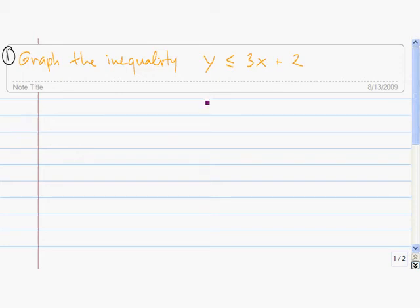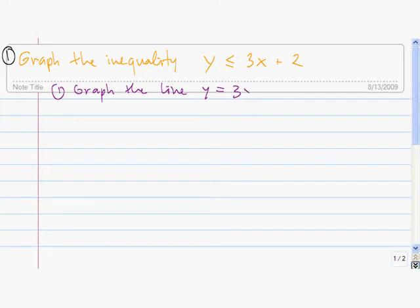The first thing we're going to do to graph this inequality is we're going to actually graph the line y equals 3x plus 2. There are a couple of ways we can go about doing this. Let's just graph it by finding two points on the line.